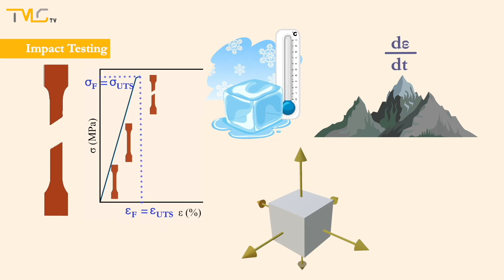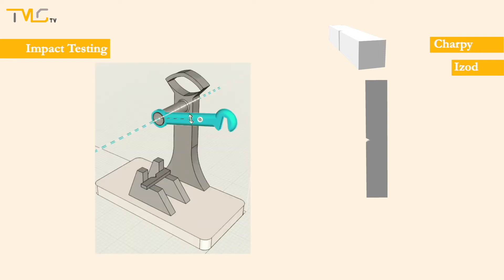Two standardized impact testing methods are Charpy and Izod. These tests are quite similar. The main difference between them is the orientation of the specimen in the test apparatus. V-notch of the sample is positioned perpendicular to the floor for Charpy and parallel to the floor for Izod testing. For both of these techniques, a square or rectangular prism specimen having a V-notch machined in the middle is placed on the setup.